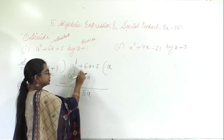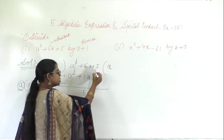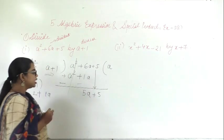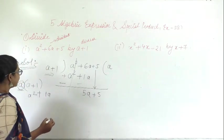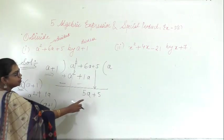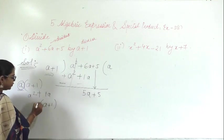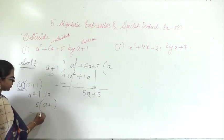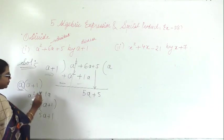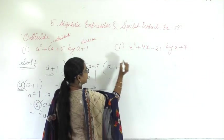The greater digit here is positive, so it will be plus 5a. Now bring this down — plus 5. Again a plus 1 is there. By which number will you multiply to get 5a plus 5? If I multiply with 5, I get 5 into a is 5a plus 1.